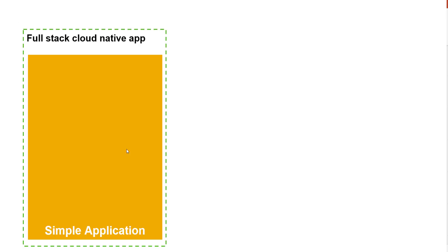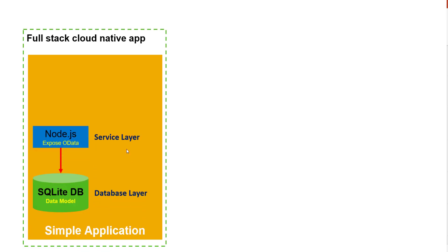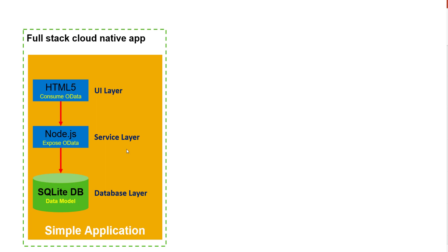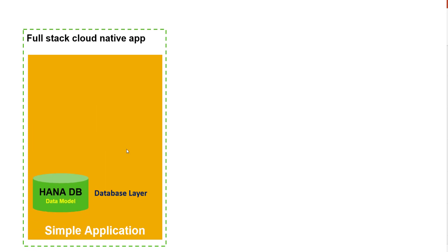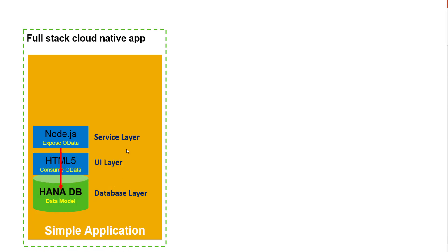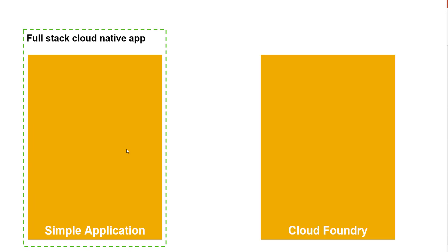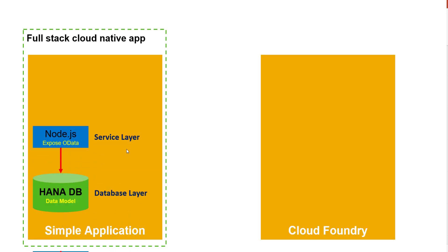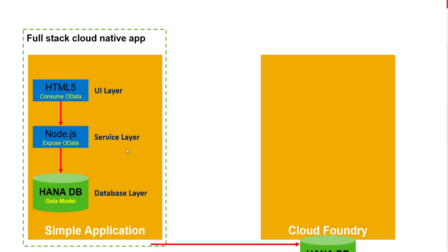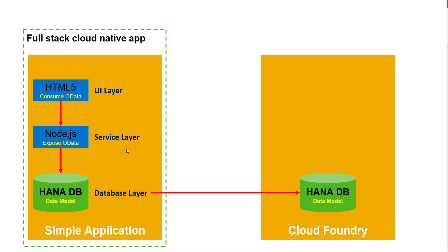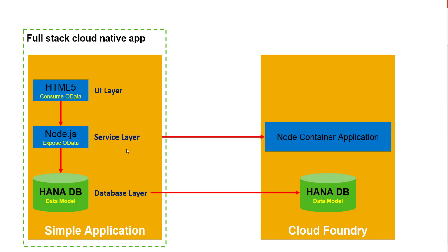In the previous sessions, we had used a SQLite in-memory database, and then we had built the Node.js layer, the service layer on top of it. We are yet to create the UI layer, but in this session, what we want to do is swap out that SQLite persistence layer with a HANA database persistence layer, keep the service layer the same way, and then eventually build the UI5 layer. We also want to move the HANA database and the service layer into the Cloud Foundry runtime, not just in our development environment.